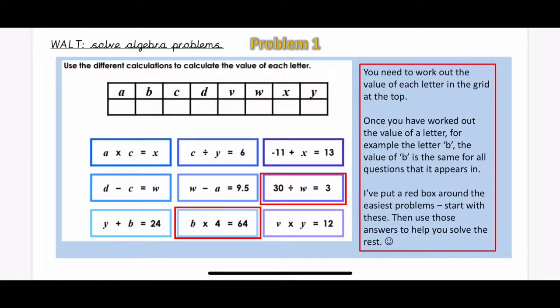Okay, so for problem 1, you have to work out the values of A, B, C, D, V, W, X, and Y, and then there's some clues underneath to help you. So there are 9 boxes.